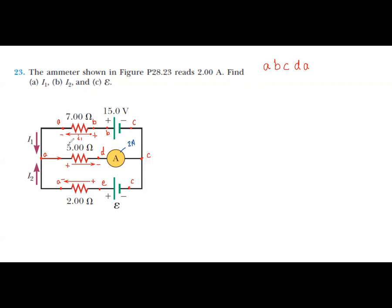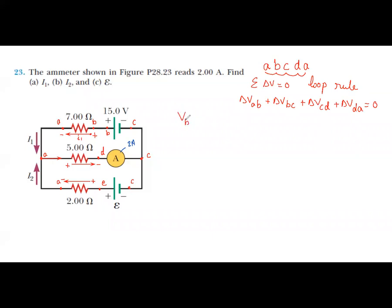For the upper loop, the summation of delta V equals zero (loop rule): delta V_ab + delta V_bc + delta V_cd + delta V_da = 0. That is, (V_b − V_a) + (V_c − V_b) + (V_d − V_c) + (V_a − V_d) = 0.